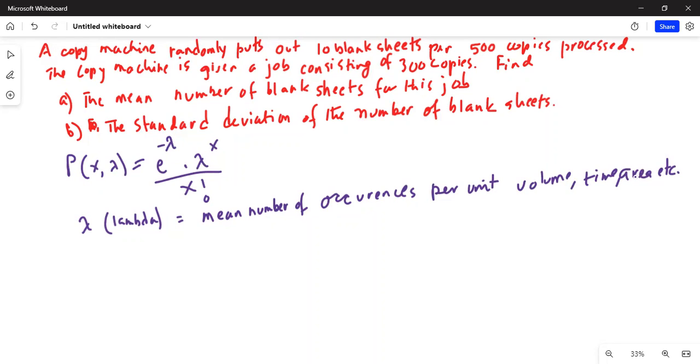We have been given the copy machine randomly puts out 10 blank sheets per 500 copies processed, and the copy machine gets a job of 300 copies.